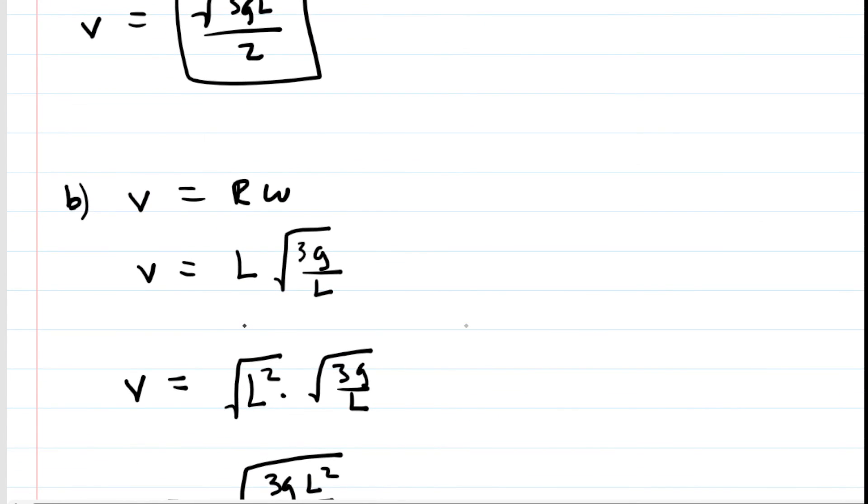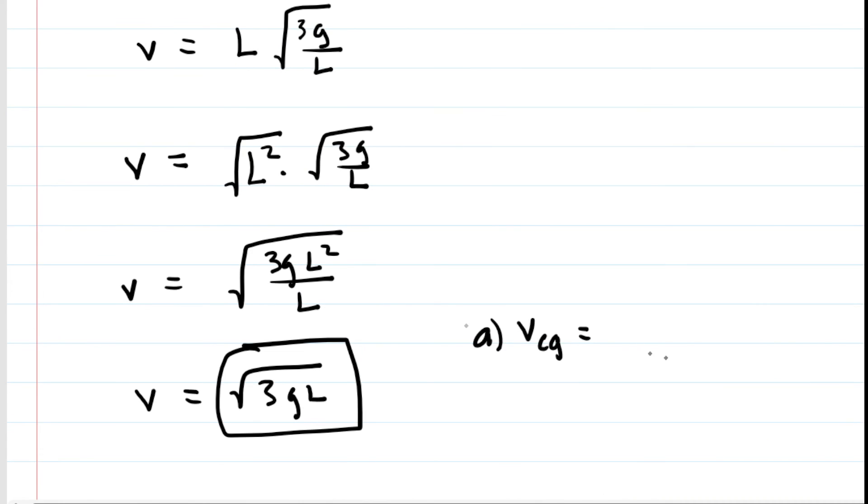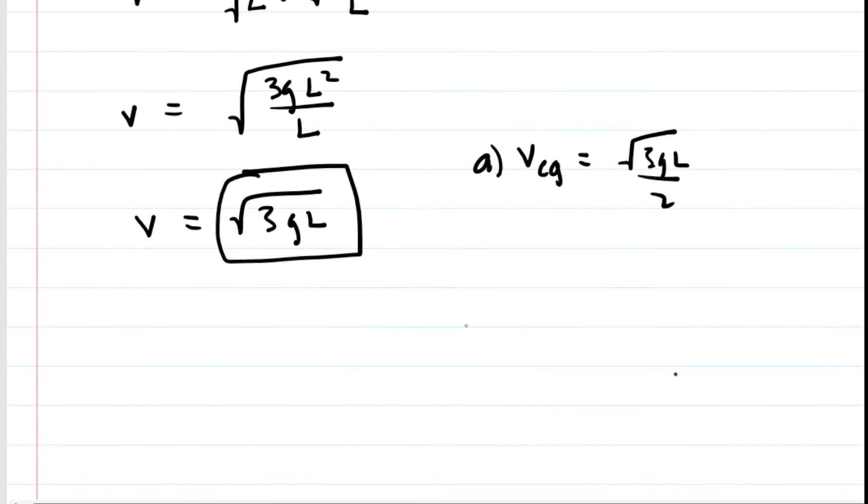We might notice an interesting relationship between the two. Remember that in part A, we had found that the speed of the center of mass or the center of gravity was the square root of 3GL over 2. Now we have a speed of the lower end. We might just say V sub L to make the lower end more apparent. That, you'll notice,